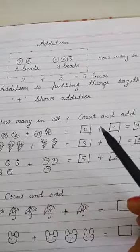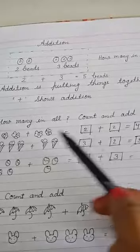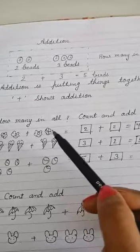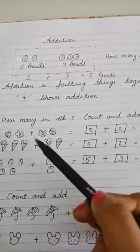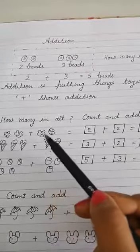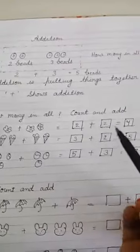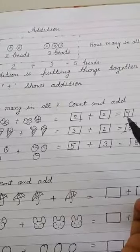Then plus sign. So we put here plus sign. And then one, two. One, two. Then how many in all? One, two, three, four. So our answer is four.